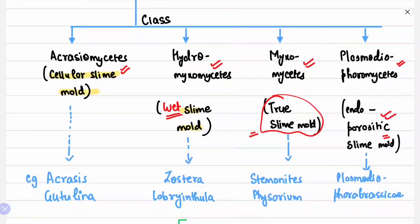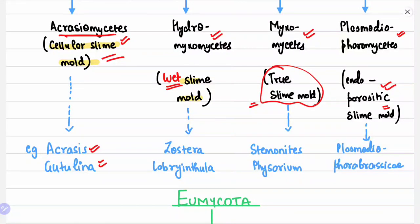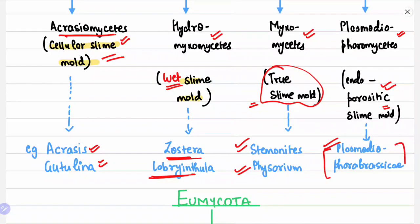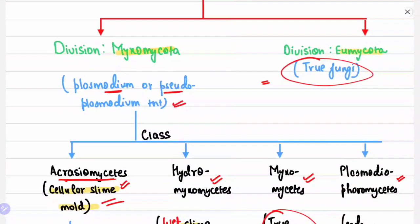Plasmodiophoromycetes are also known as endoparasitic slime molds, because they act as parasites inside the plant body. Examples for each class: Acrasiomycetes — Achrasis and Gutulina; Hyphochytriomycetes — Zostera and Labyrinthula; Myxomycetes — Stemonitis and Physarum; Plasmodiophoromycetes — Plasmodiophora.